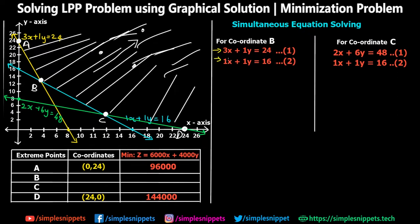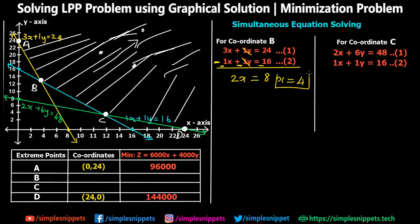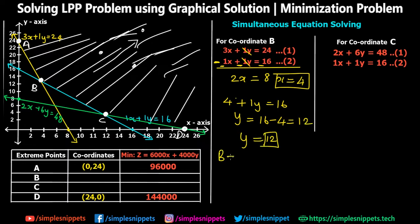For point B, lines 3x + y = 24 and x + y = 16 intersect. Subtracting the second from the first: 2x = 8, so x = 4. Substituting x = 4 into x + y = 16 gives y = 12. So coordinate B is (4, 12).